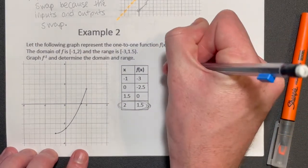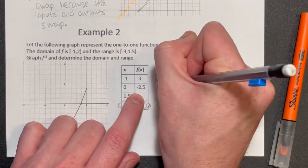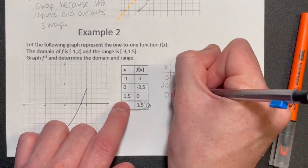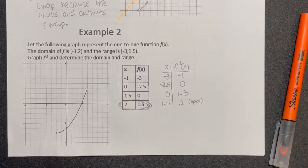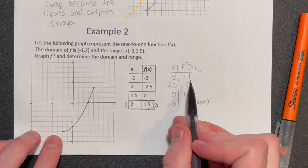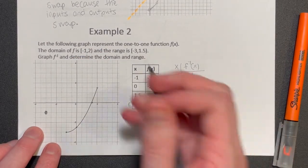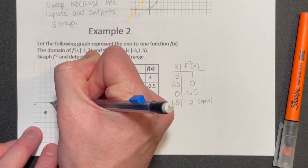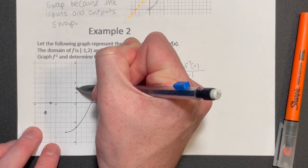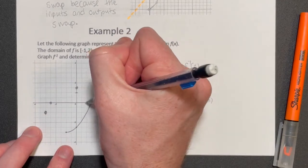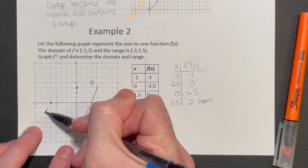Building the x and f-inverse table: negative 3 maps to negative 1, negative 2.5 maps to 0, 0 maps to 1.5, and 1.5 maps to 2 — remembering that last one will be an open circle. Graphing those: negative 3, negative 1 gets a closed dot; negative 2.5, 0; then 0, 1.5; and finally 1.5, 2 gets our open circle. We then connect the dots to show what the inverse graph looks like.